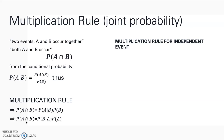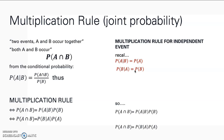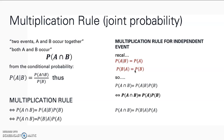If two events A and B are independent, it implies that P(A|B) equals P(A) and P(B|A) equals P(B), as discussed before. So the joint probability of two independent events is simply P(A) times P(B). This is because the conditional probability reduces to the unconditional probability when the events are independent — B has no effect on A, and A has no effect on B.